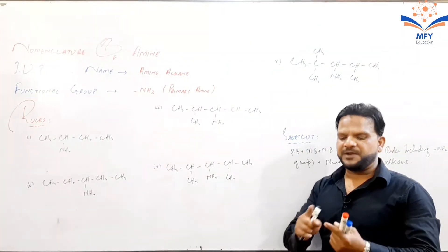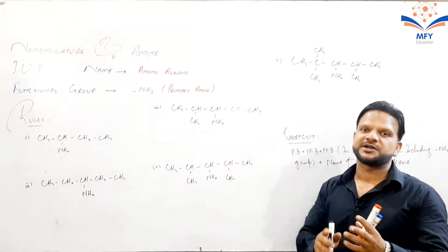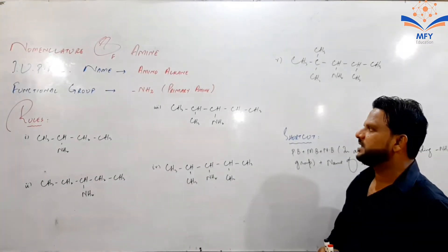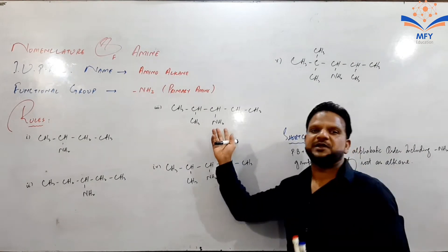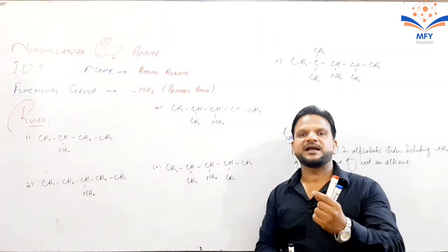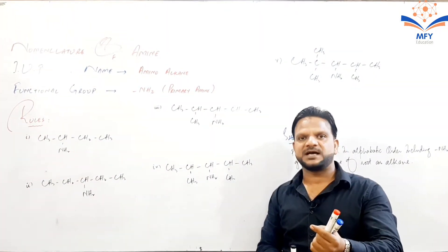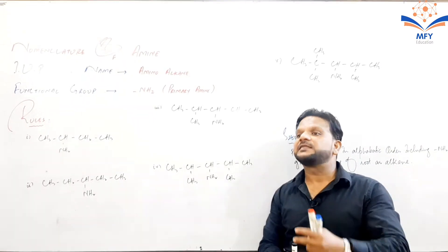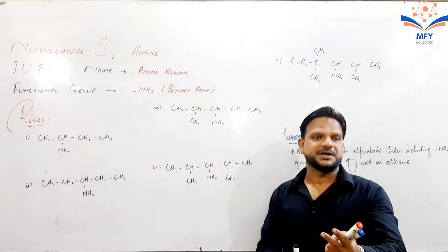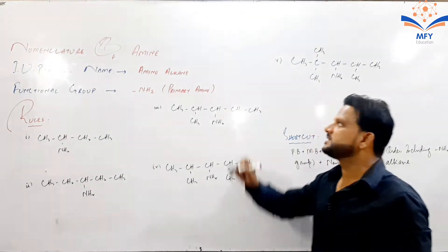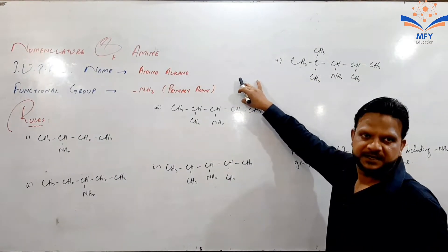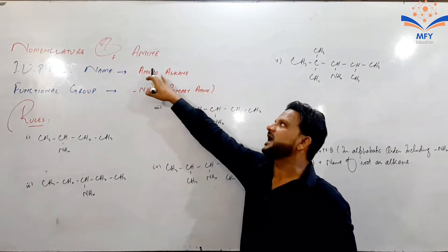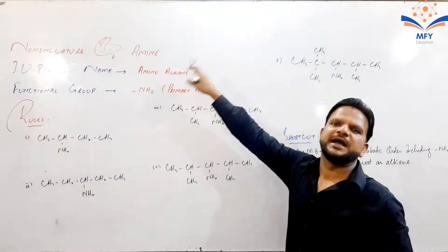Amine has three types: primary amine, secondary amine, and tertiary amine. If one alkyl group is attached with the amino group, it will be called primary amine; two alkyl groups attached gives secondary; three alkyl groups attached gives tertiary. Here we will study the nomenclature of primary amine. Its functional group is NH2 and its IUPAC name is aminoalkane — amino methane, ethane, propane, butane, and so on.